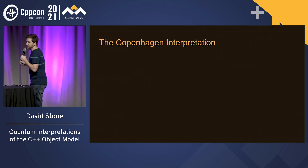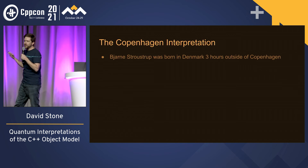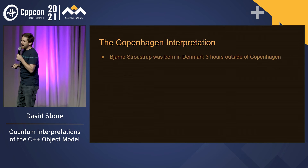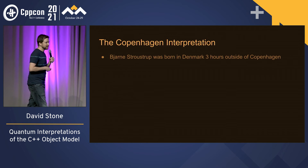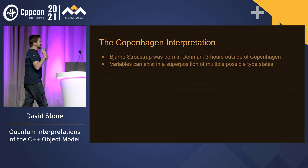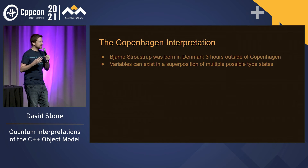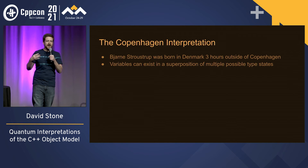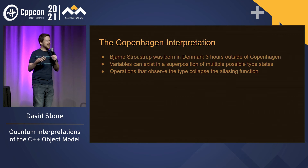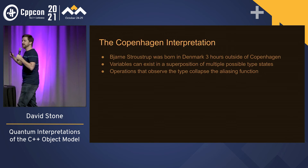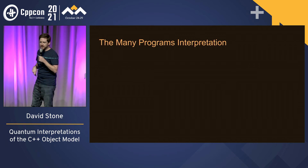First, the Copenhagen interpretation — so named because Bjarne Stroustrup was born in Denmark, three hours outside of Copenhagen. The Ahas interpretation didn't seem like it would roll off the tongue quite as well, so they called it the Copenhagen interpretation. Basically, it says that variables can exist in a superposition of multiple possible type states, focused on what type is this variable. You can't actually say — you have to observe it. When you observe the type, this collapses the aliasing function and forces the type to be the type you observed it as.